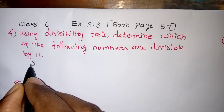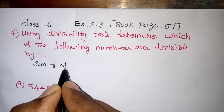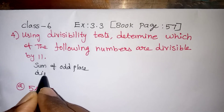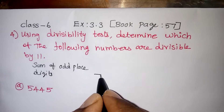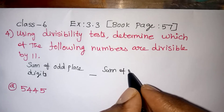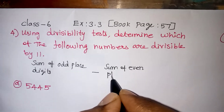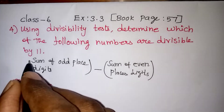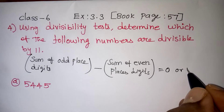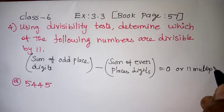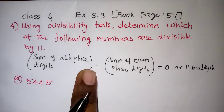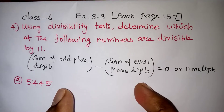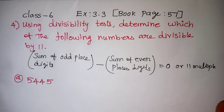The rule for 11 is very easy. Take the sum of odd place digits and minus the sum of even place digits. If you subtract them and the answer is 0 or a multiple of 11, then that particular number will come in the 11 times table.